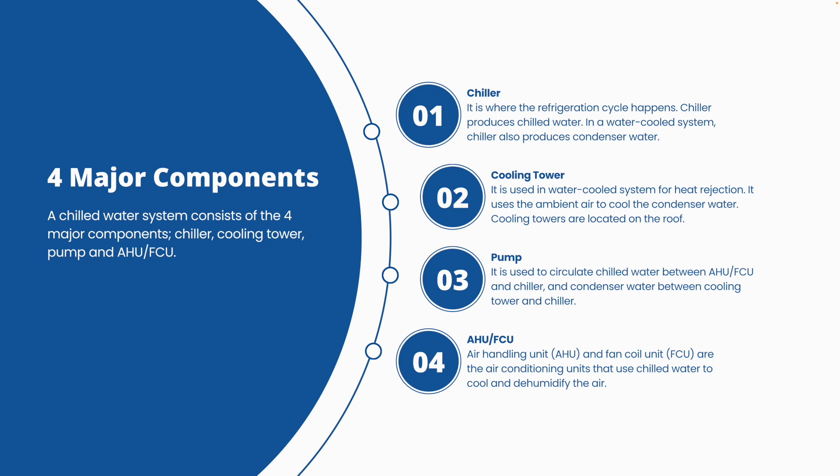The first of the four major components is the chiller. It is the main component — the heart of the system. The chiller is where the refrigeration cycle happens: compression, expansion, condensation and evaporation all occur inside the chiller.